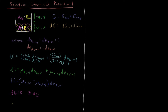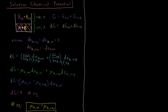At equilibrium, the chemical potential of A in solution equals the chemical potential of A in the vapor. This is true of any phases in equilibrium with each other — the chemical potential must be equal between phases. Since chemical potential is just the molar Gibbs energy, mu_A equals the molar Gibbs energy of A.